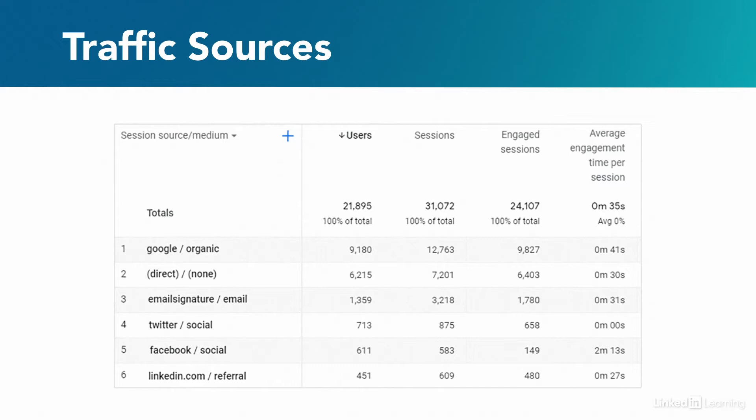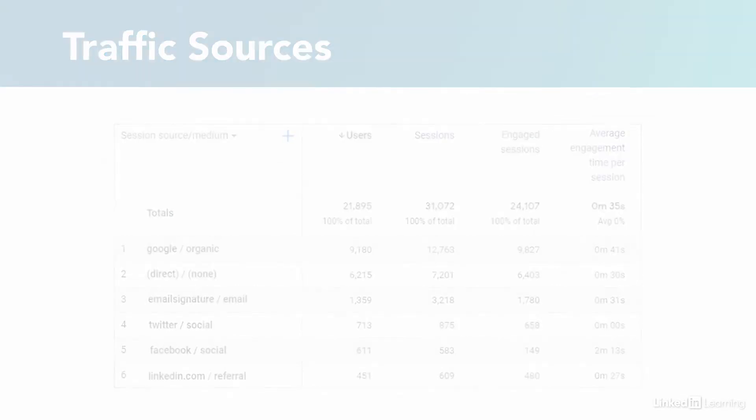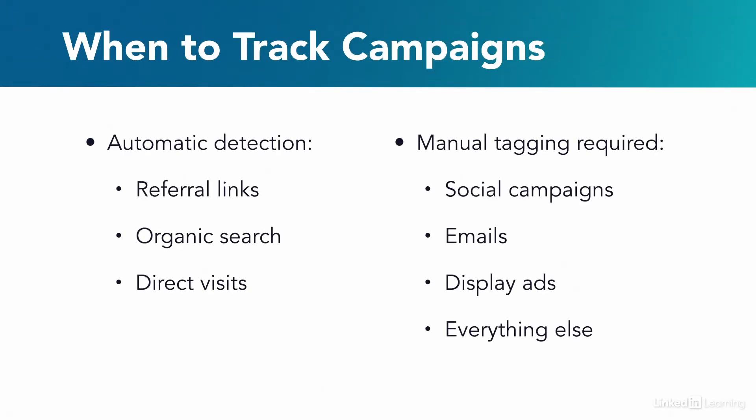Google Analytics grabs that info and uses it wherever it can. But sometimes we need to take that a step further and make it really powerful. If we're able to supply some extra info about the click — perhaps that this click is part of a paid campaign, an email, or social media post — well, how does Google know that? We have a way of doing that: we can tell Google Analytics to track that extra info. We call this manual tagging.